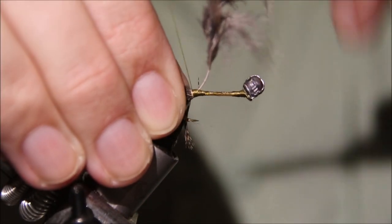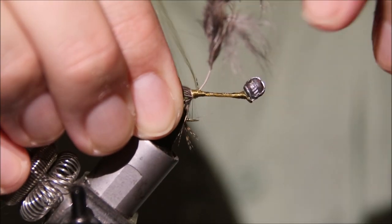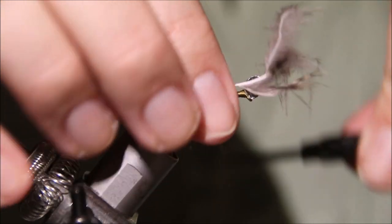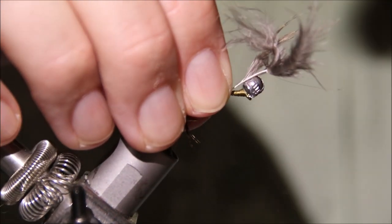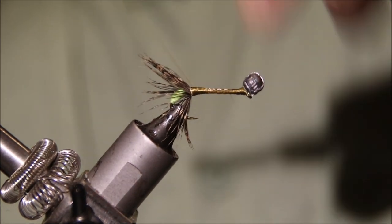Combined with that bright green tag, it's a trigger, an attractor. I'll cover that up and tie the stalk down the length of the body, then snap it away and bring my thread back.